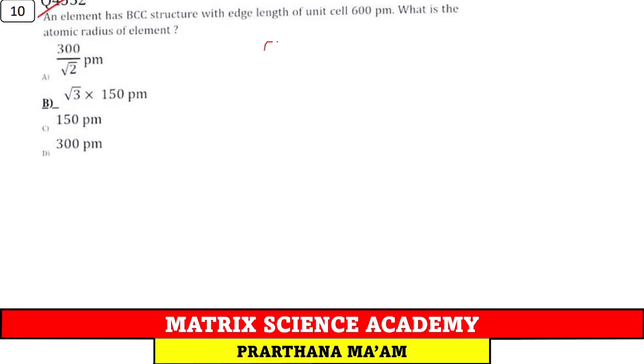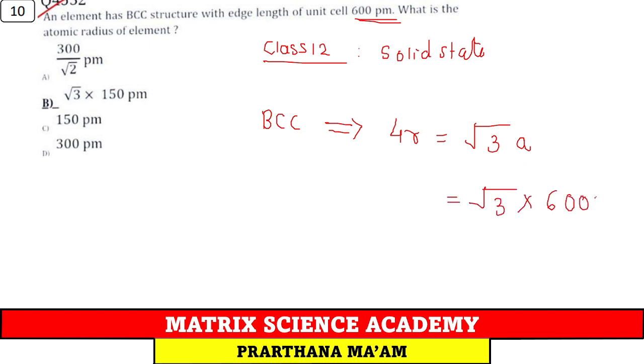Question number 10. This question is from class 12 chapter 1 solid state. An element has BCC structure. If element has BCC structure, then relation is 4R equals root 3 times a, with edge length of 600 picometer. Edge length a is given as 600 picometer. What is radius? To find radius, use formula 4R equals root 3 times a. A is 600, so R equals root 3 into 600 divided by 4, which is root 3 into 150 picometer. Answer is option B.